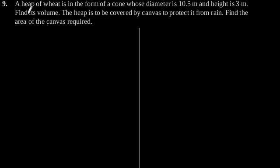Exercise 13.7, Question number 9. A heap of wheat is in the form of a cone whose diameter is 10.5 meters and height is 3 meters.